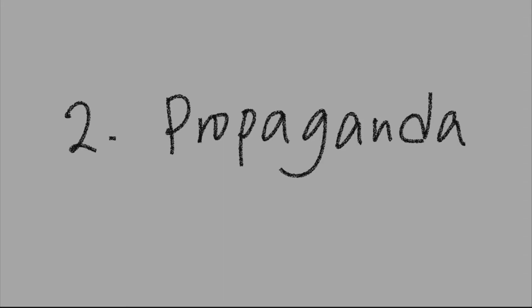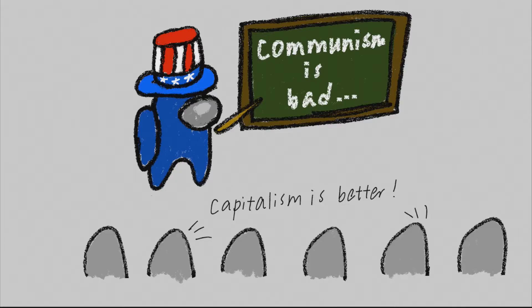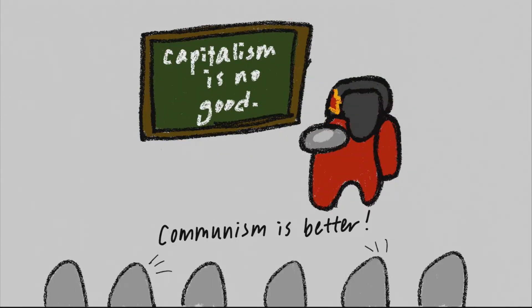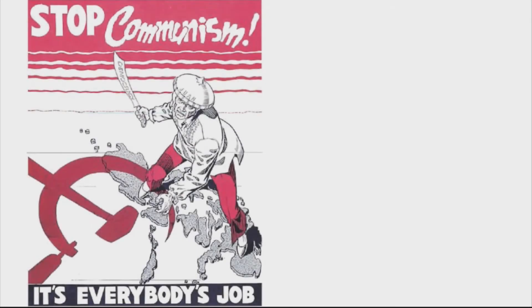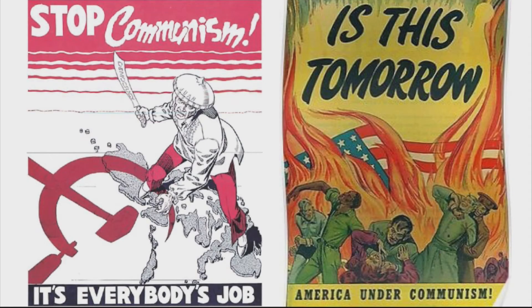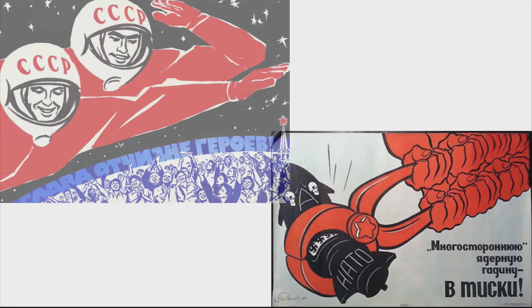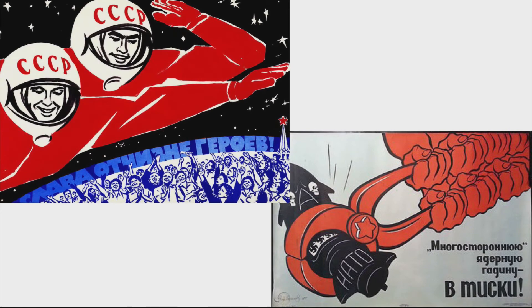Number two: propaganda. They use political posters and education, etc., to educate their people that the opposite bloc and their ideas are bad, and that their own ideas and bloc is the better one. For example, the capitalist bloc's posters show how communism is the bad side of the world, whereas for the communist side, they show themselves as being more powerful and the heroes of the earth.